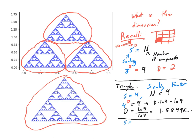See, if my shrinking factor was two and the number of pieces was three, then I would get that two to the d is equal to three. So that means that d is equal to the natural log of three divided by the natural log of two, which is exactly the same value for that. Isn't that cool?